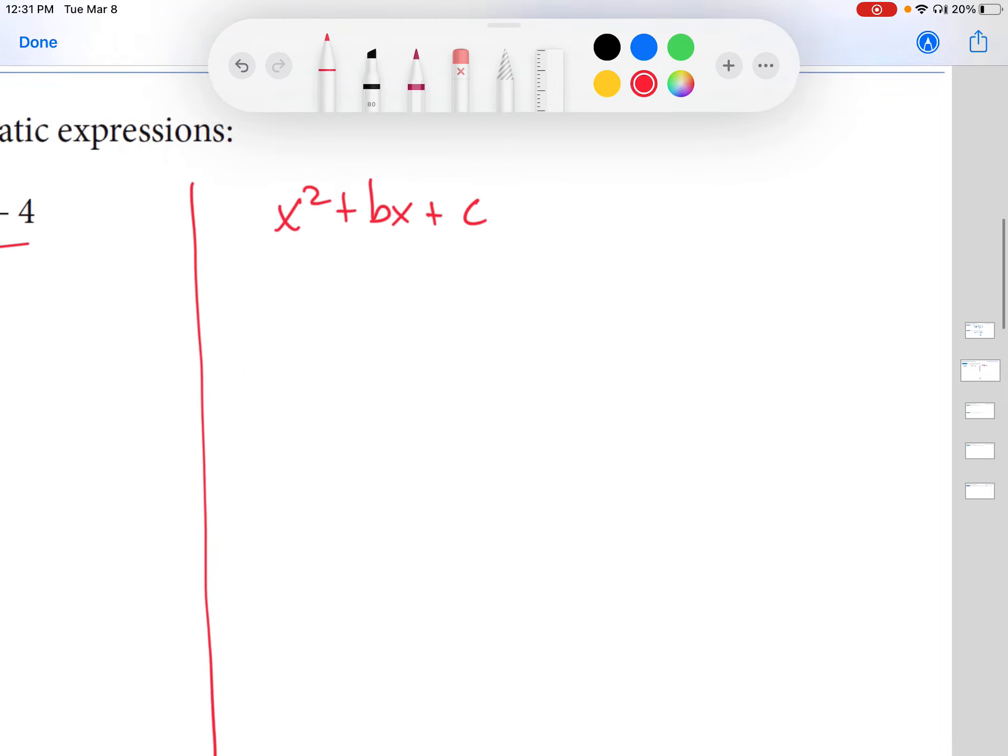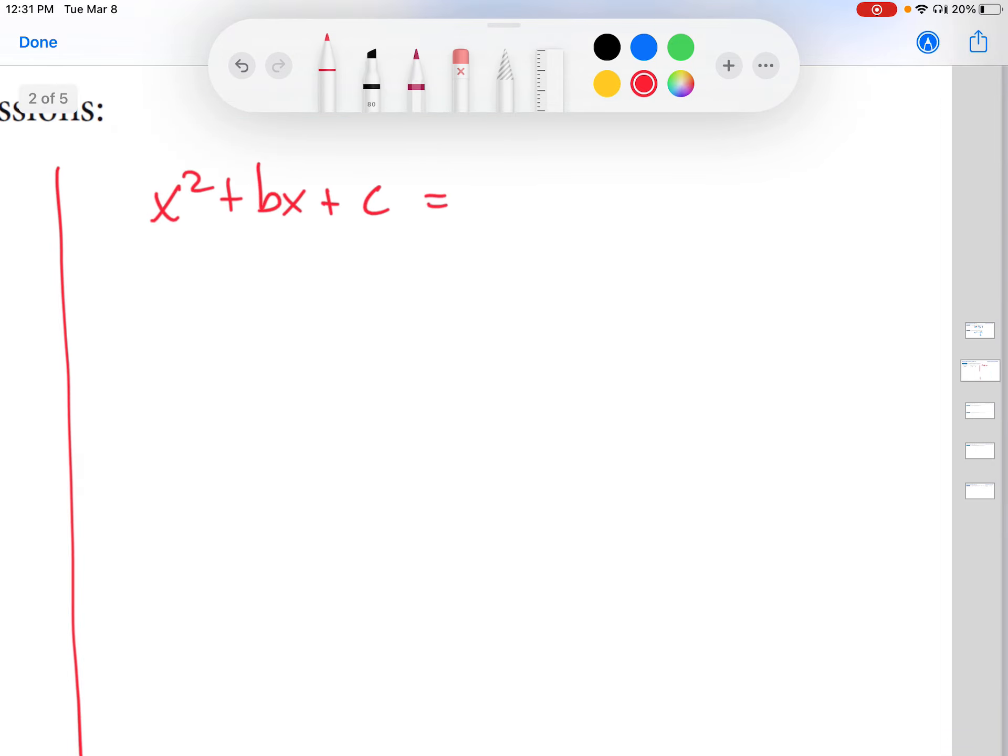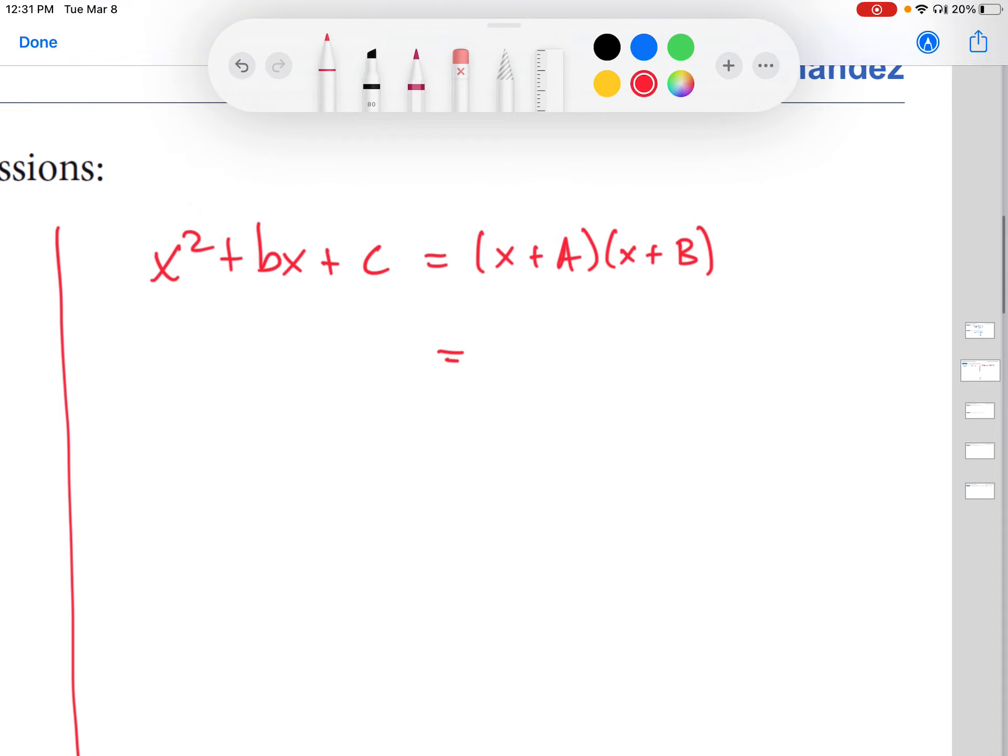So what it means to factor an expression like this is that we are looking for linear factors of the form x plus capital A, x plus capital B, that when multiplied together yield the original quadratic expression. So let's multiply this out on the right-hand side. We're going to use the FOIL method. You might remember that.